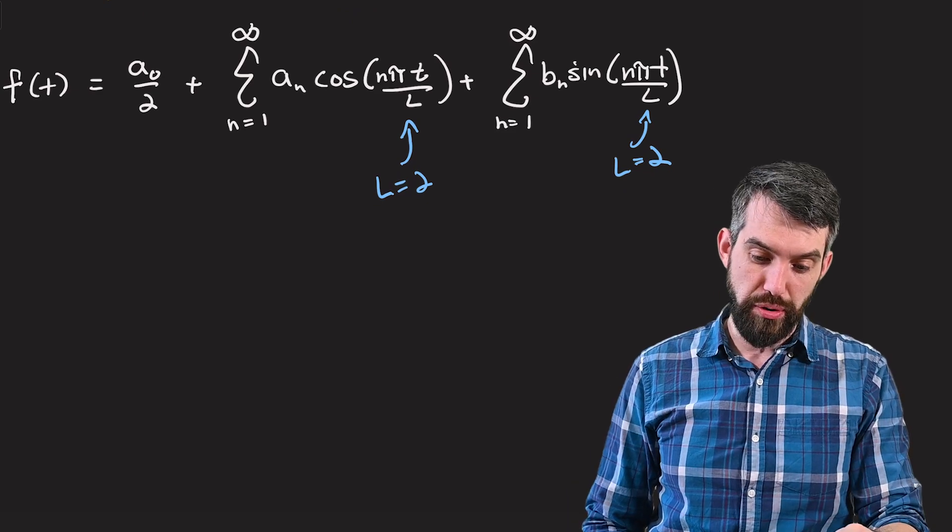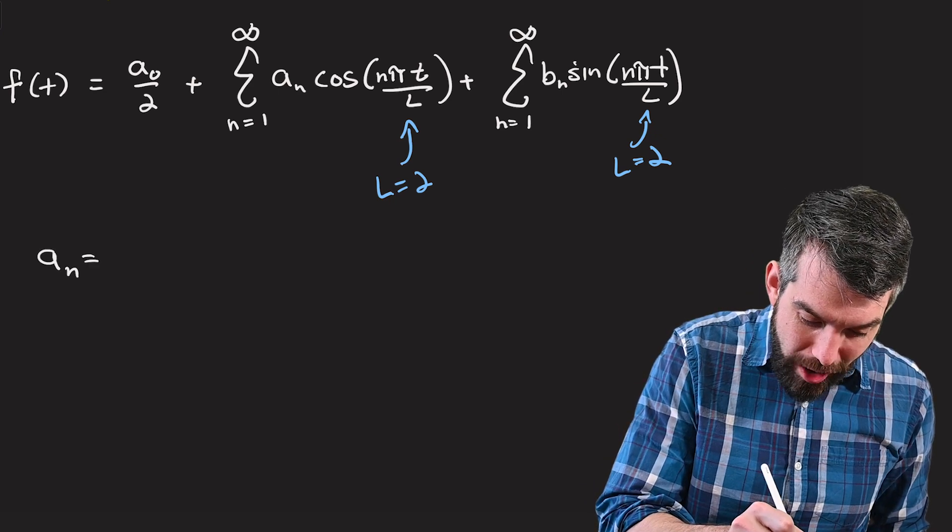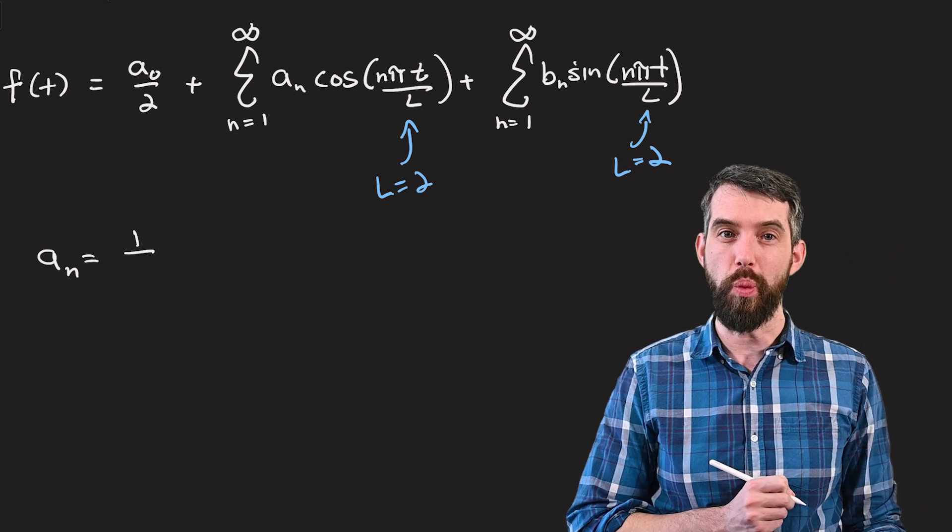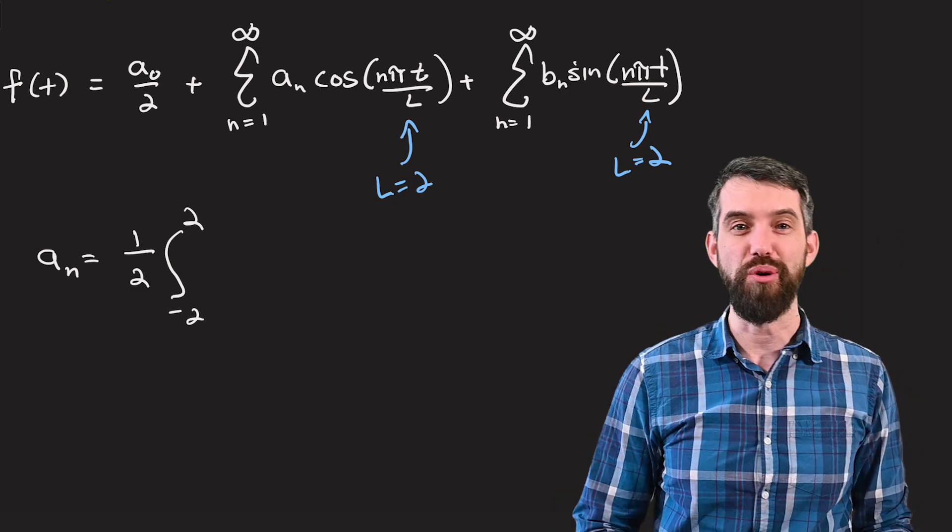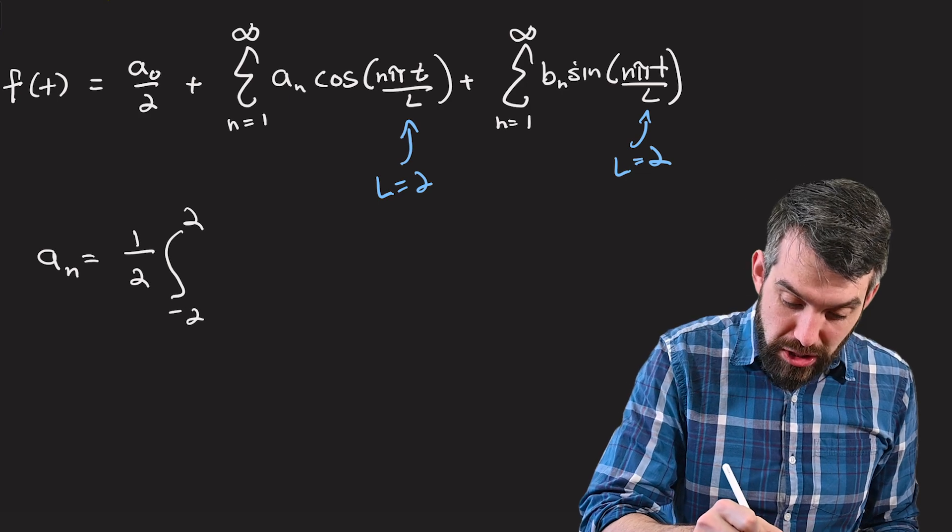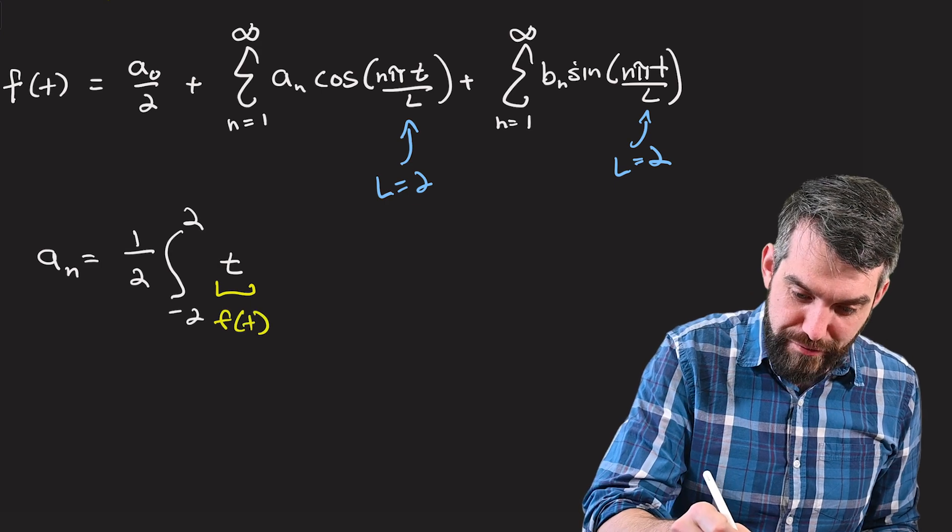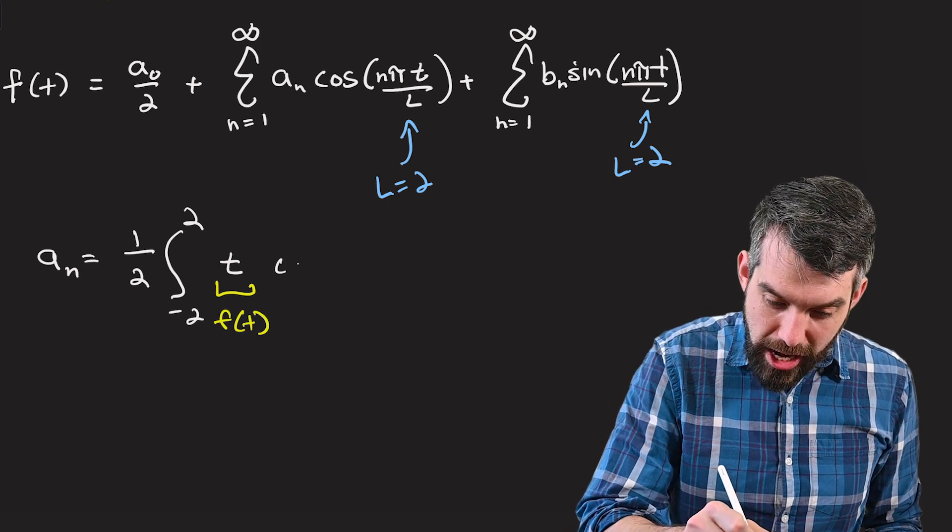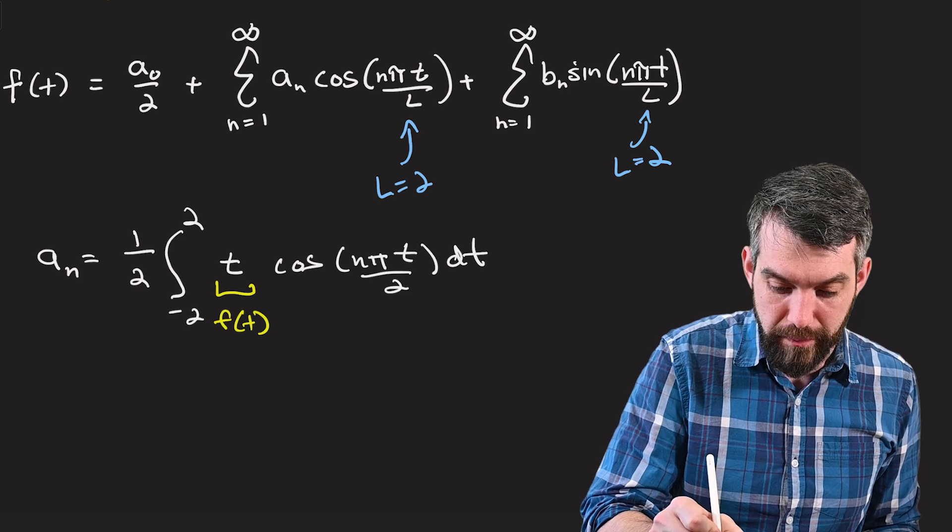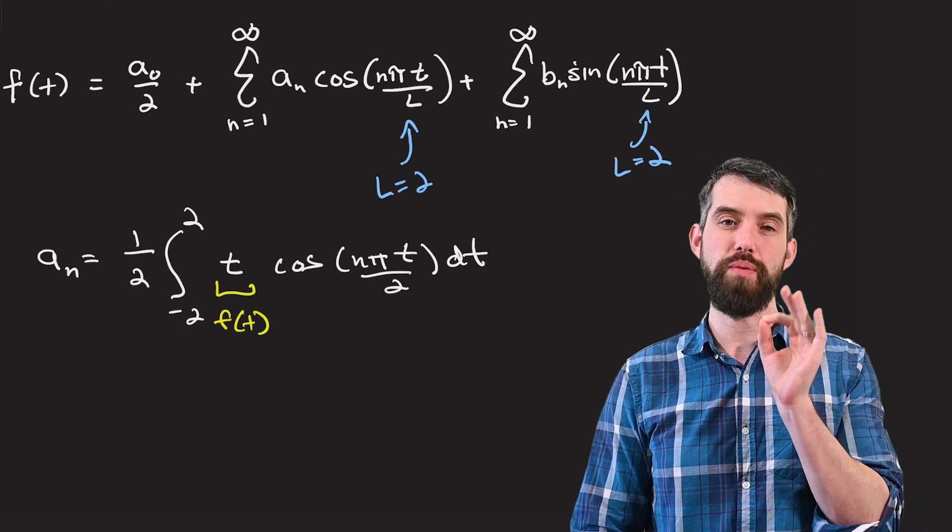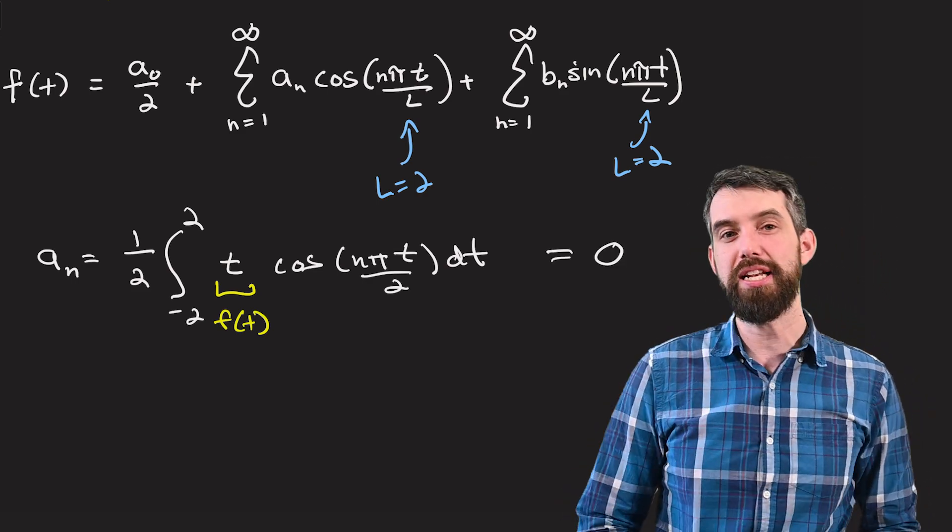Now the next thing I want to do is try to write down the formulas for the coefficients. First what I'm going to do is write down the formula for the a_n, and the formula goes as this. It's 1 divided by l, which in this case is the value of 2, the integral between minus l and plus l, which is minus 2 up to 2. And then for the integrand, I put first the function, which in our case is going to be t, so this is the specific function that we have for our specific example, and then multiplied by cosine of n pi t divided by 2 dt. Now, do I need to evaluate this integral? In fact, I do not.